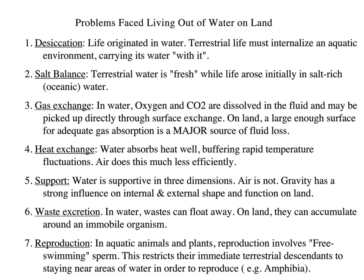Last but not least, reproduction. In aquatic animals and plants, you can have male gametes that will swim, but they're not able to do that anymore once you start moving to land and get into drier areas. So plants had to deal with that too. All of these are considerations plants had to face as they shifted from water life to land life.